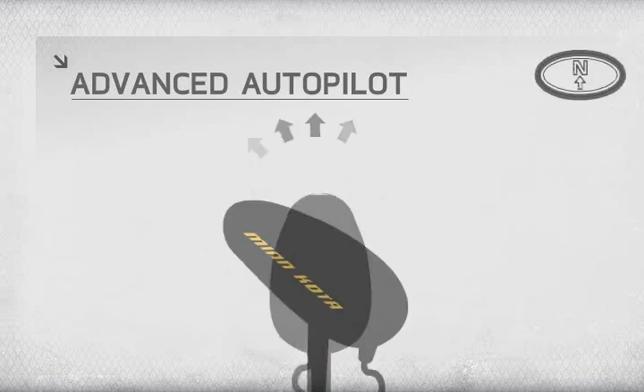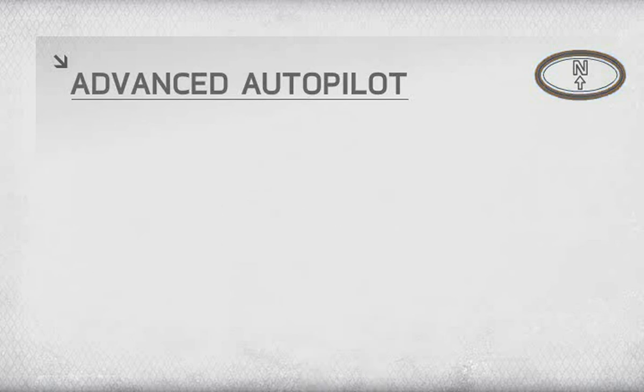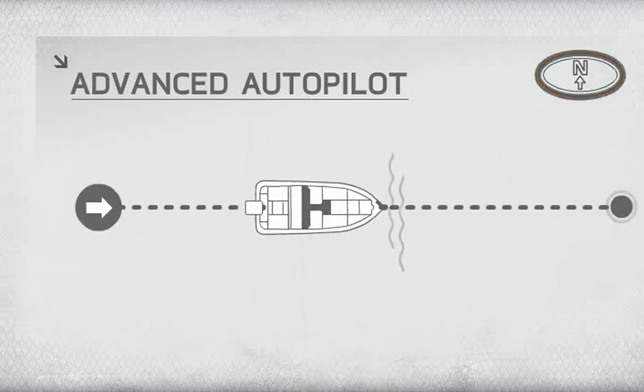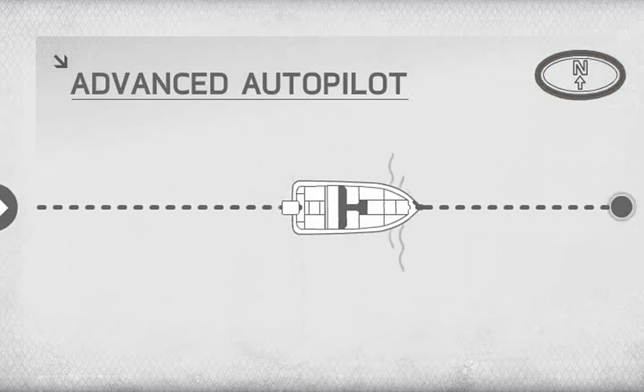Just point the trolling motor in the direction you want to travel and push the Advanced Autopilot button. iPilot will keep you on that heading with GPS accuracy, automatically steering your boat for you so you can concentrate on fishing.